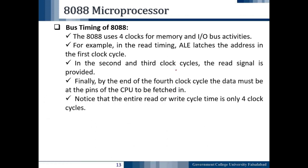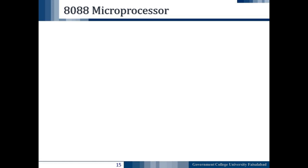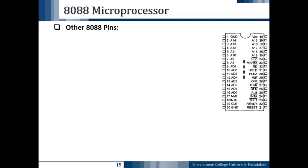The entire read or write cycle time is only 4 clock cycles. If the task of reading or writing takes more than 4 clock cycles due to the slowness of the memory or input/output devices, a wait state can be requested from the CPU. Now we move forward to discuss the remaining pins of the microprocessor.